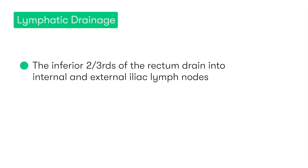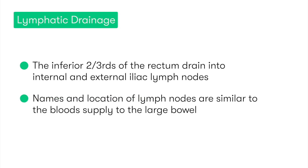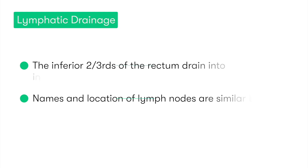The inferior two-thirds of the rectum do not drain into the inferior mesenteric nodes; instead they drain into the internal and external iliac lymph nodes. You can see how there is significant mirroring in terms of the names and locations of these lymph nodes with that which we see with the blood supply to the large bowel.